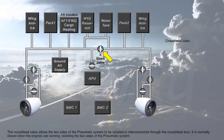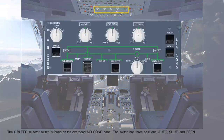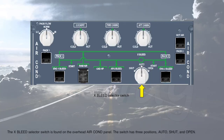The cross-bleed valve allows the two sides of the pneumatic system to be isolated or interconnected through the cross-bleed duct. It is normally closed when the engines are running, isolating the two sides of the pneumatic system. The cross-bleed selector switch is found on the overhead air conditioning panel. The switch has three positions: auto, shut, and open.